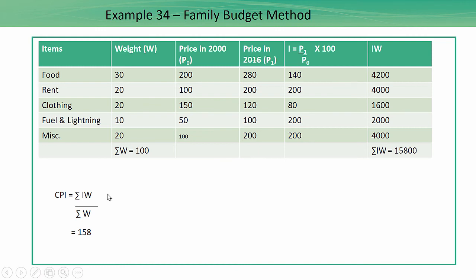So P0, P1, we will find out the I which is P1 divided by P0 into 100. That's your 280 divided by 200 into 100. So I'll get I. I'll multiply this I with the weights.